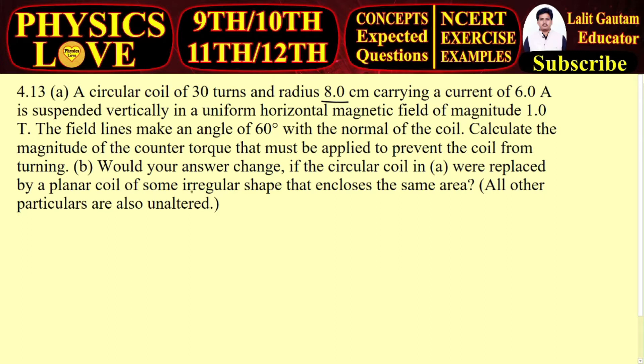According to the question, the number of turns are 30, radius of the coil is 8 × 10^-2 meters, carrying a current of 6 amperes, and the value of magnetic field is 1 tesla.